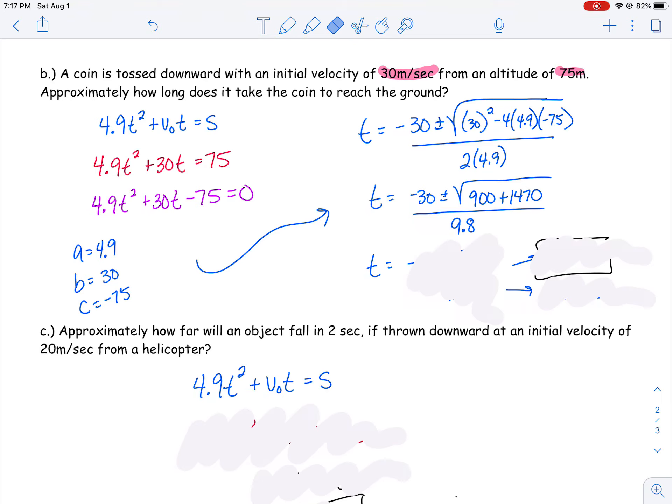I've got 900 plus 1,470 underneath that radical, which is 2,370. Then I can use my calculator. I can do negative 30 plus the square root of 2,370 divided by 9.8, and then negative 30 minus the square root of 2,370 divided by 9.8. I end up getting negative 8.03 and 1.91. But t was seconds, so it doesn't make sense to have a negative time. So it takes about 1.91 seconds for that coin to reach the ground.